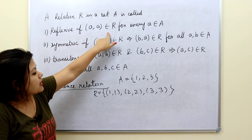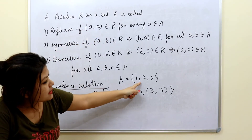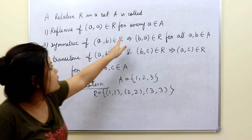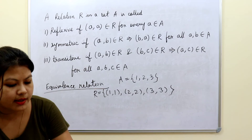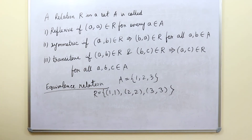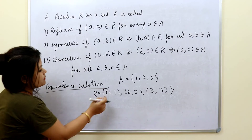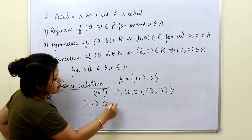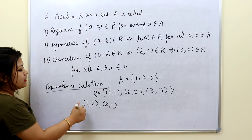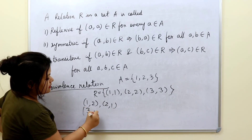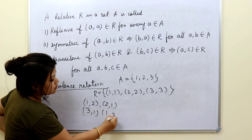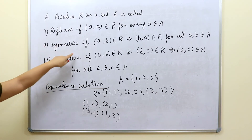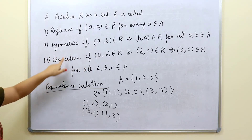For reflexive: (1,1) must belong to R — since elements were 1, 2, 3, all of (1,1), (2,2), (3,3) must be included for every a in A. For symmetric: suppose (1,2) is in R, then (2,1) should also be included. And if (3,1) is in R, then (1,3) should also be included in the relation. Only then will that relation be called a symmetric relation.